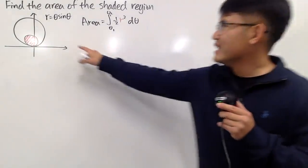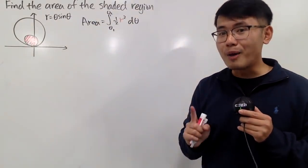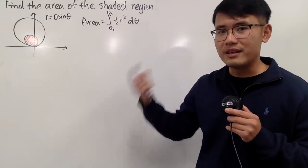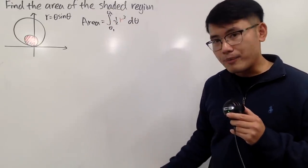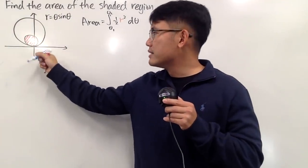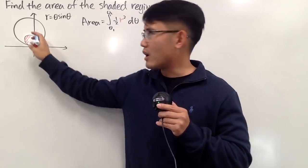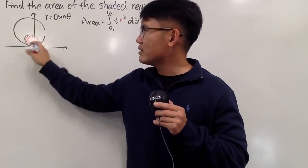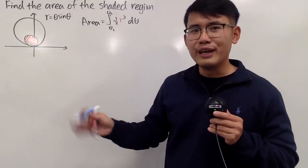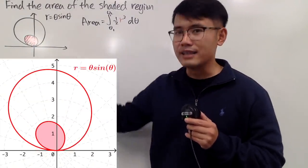Notice it's actually really easy to just put the formula in, but the hard part is figuring out the angles — theta 1 to theta 2. So let's take a look. The curve starts right here and goes around — and it's actually not a circle, not because I cannot draw, but because this is genuinely not a circle.